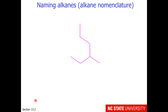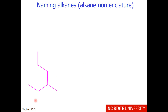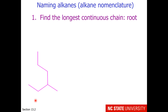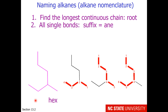This alkane has 7 carbons, but we can't call it heptane — heptane implies all 7 carbons in the same main chain. So we need to find the longest continuous chain, which will be our root. The longest continuous chain here is 6 carbons long, so the root is 'hex'. It has all single bonds, so the suffix will be '-ane'.